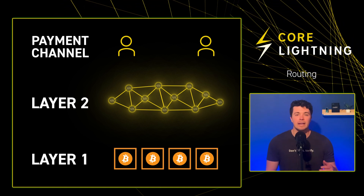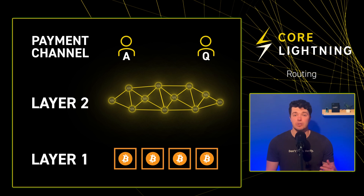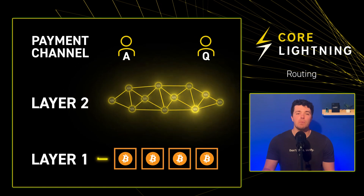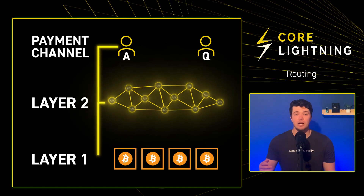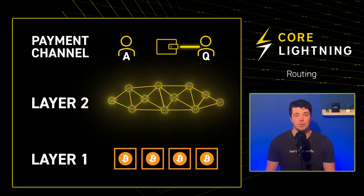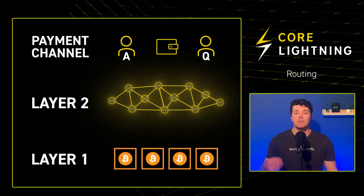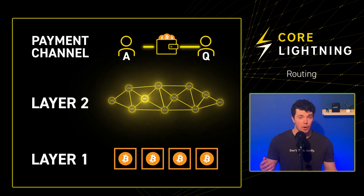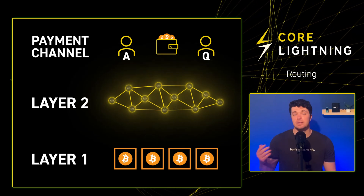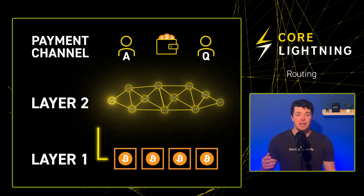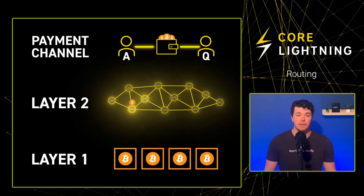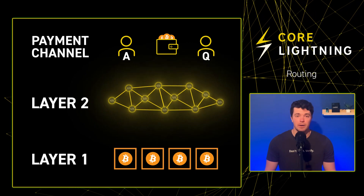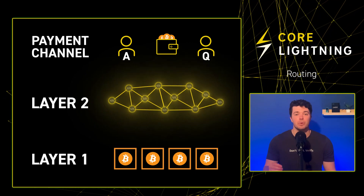For example, when Lightning user A wants to pay Lightning user Q, but they do not have a channel open directly with each other, the payment will be routed from user A through shared peers to create a path to user Q. Through routing, user A can send a payment to user Q with the assurance that the other nodes will forward the payment. In exchange for their assistance, the routing channels will receive a small fee. Routing is what allows transactions between two unconnected peers to occur through a series of pre-existing channels.